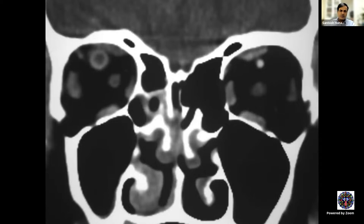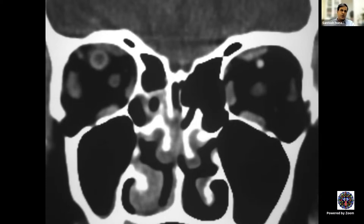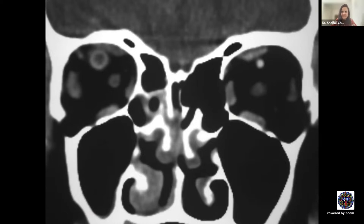Before I begin, I would like to ask one of the fellows — Ruju probably — if you look at this particular scan, would you be able to diagnose this patient? I'm going to show you this scan. This is a coronal scan. Shefali, you can take it if Ruju can't. It's a CT coronal scan. In the right eye, there is a dilated superior ophthalmic vein that I can see. Probably the superior ophthalmic vein is dilated here.